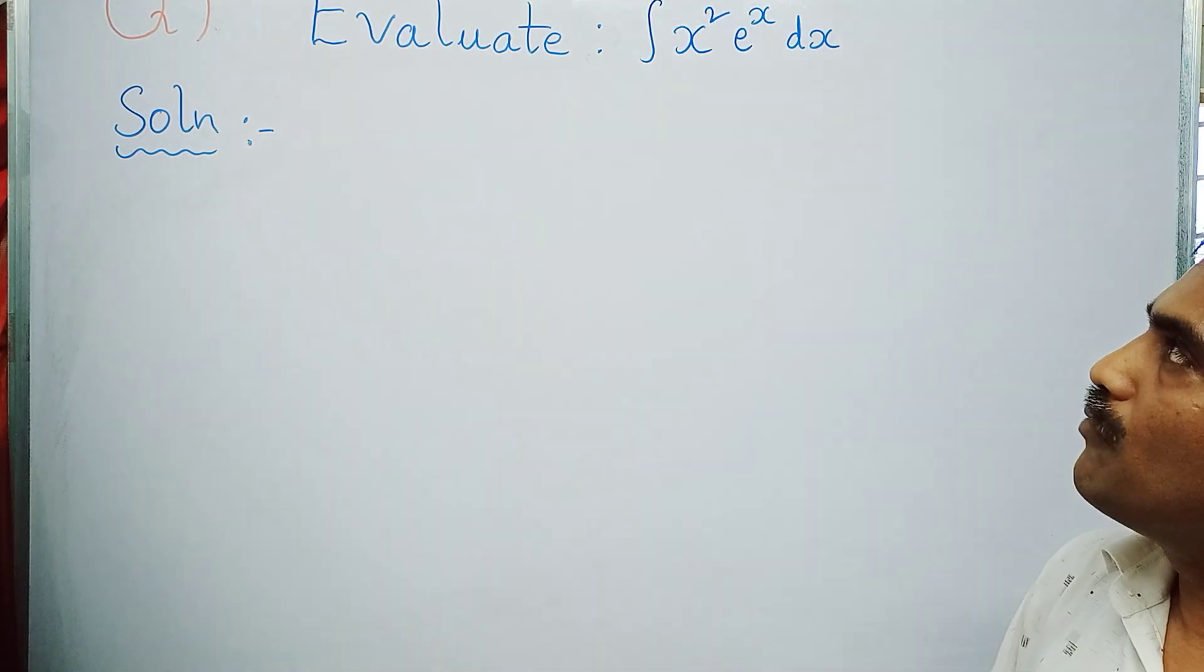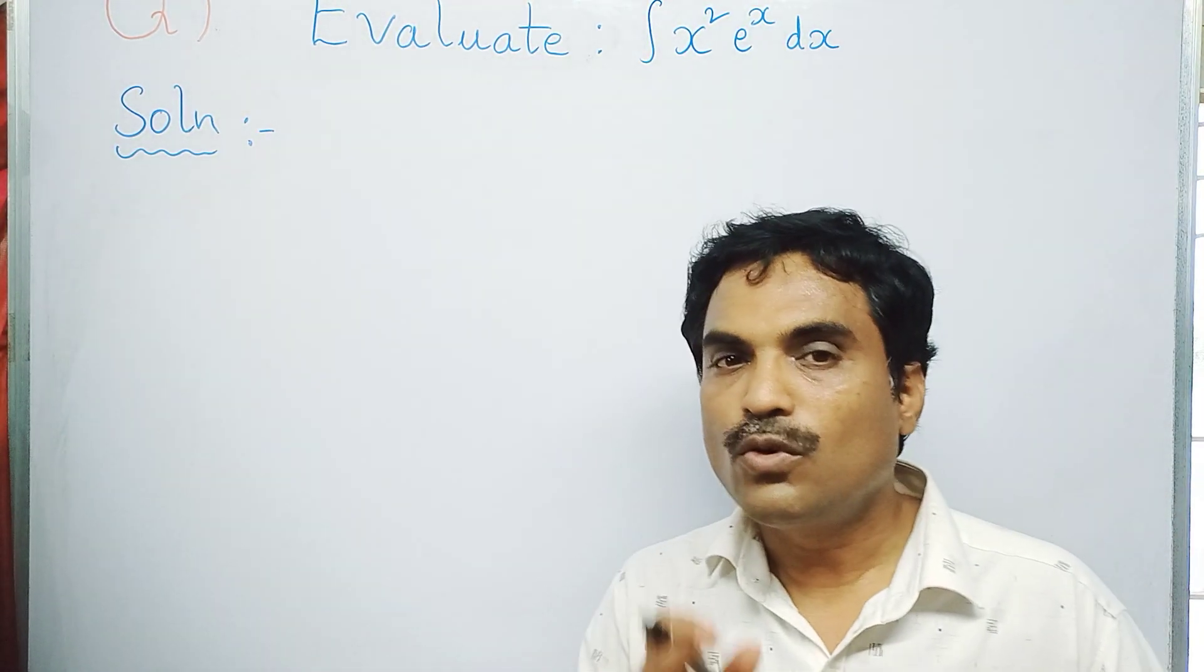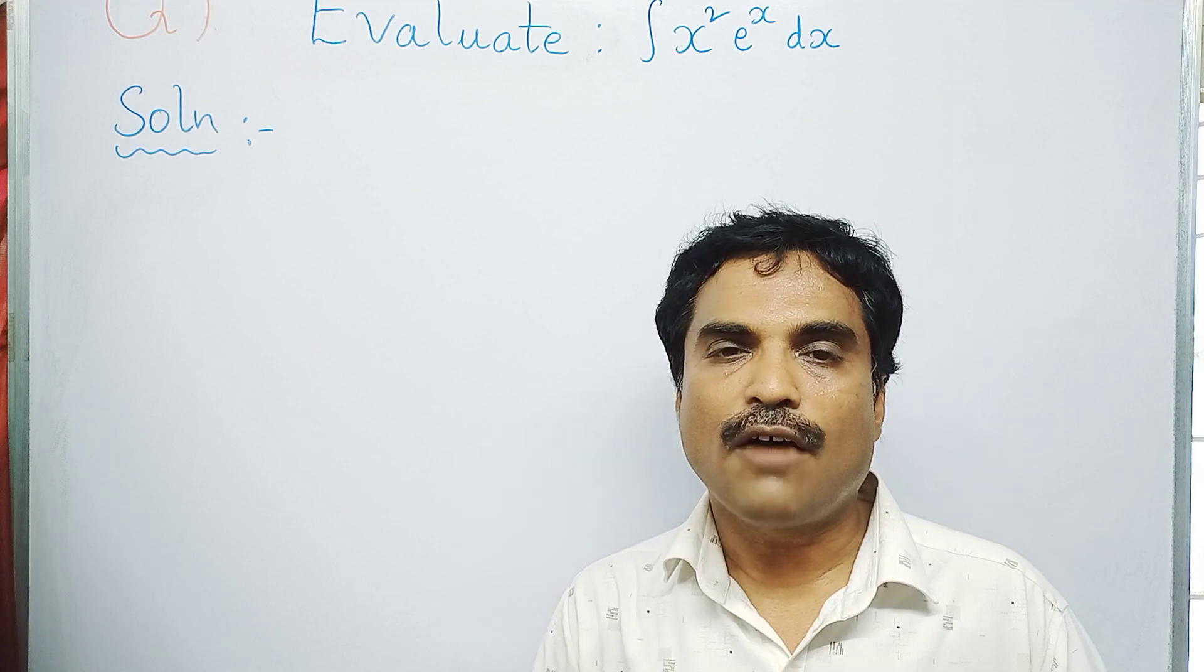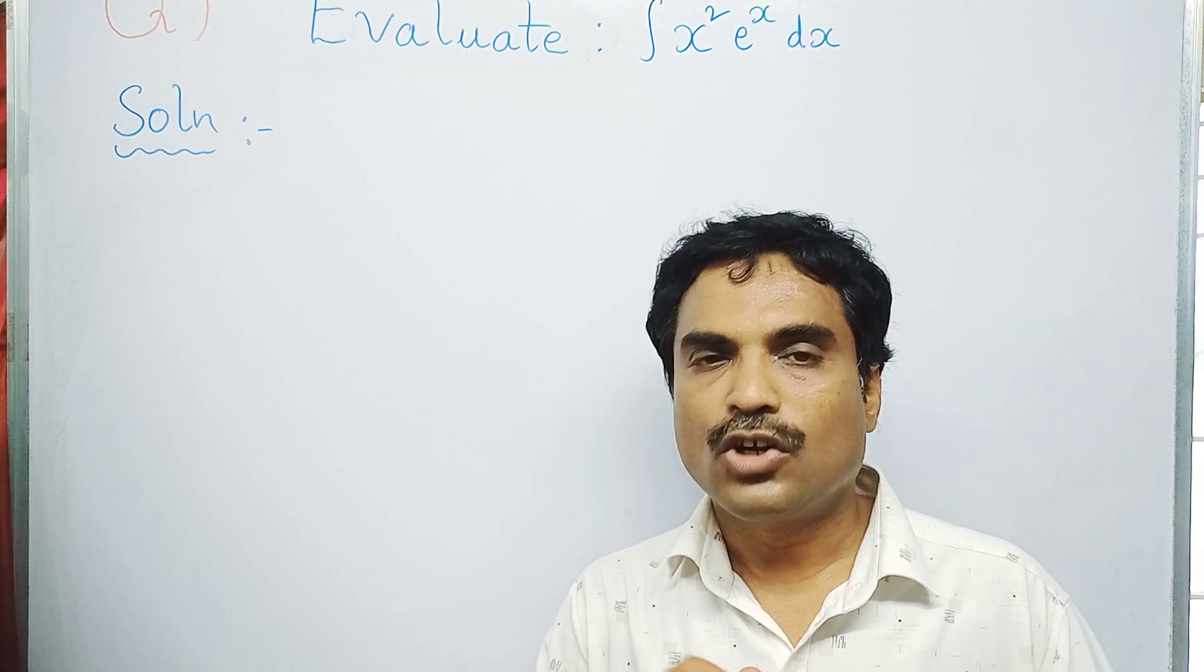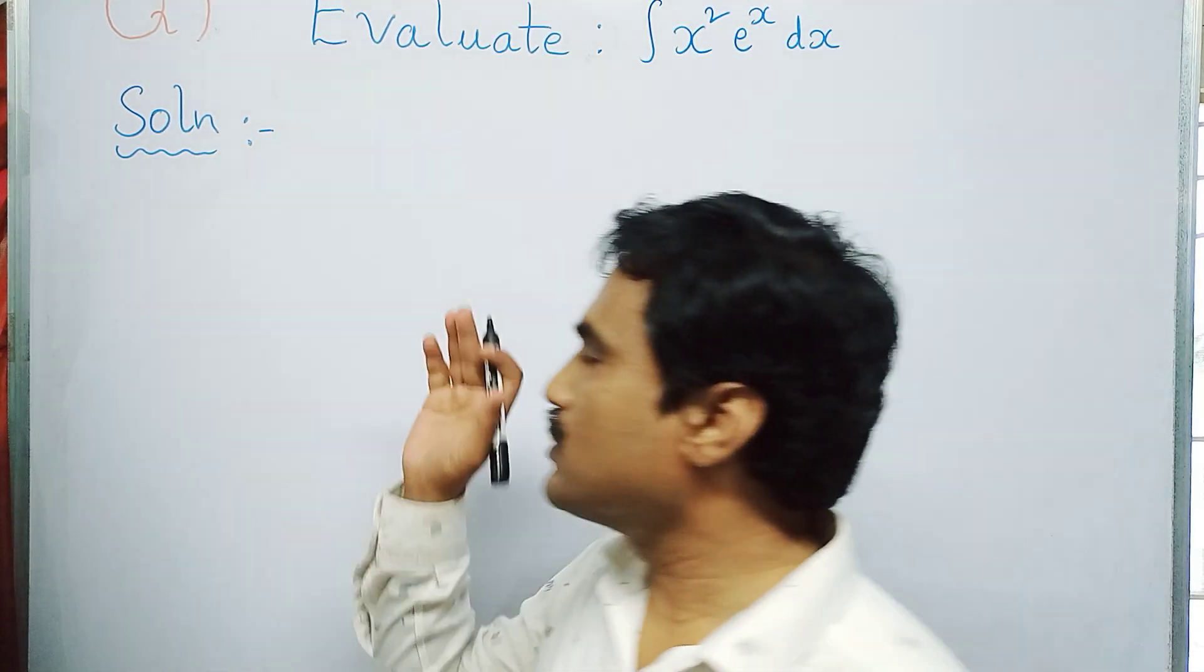First, from the given integrand that consists of two functions, we choose u and dv by using the term ILATE. After that, we apply the Bernoulli's formula of integration by parts method to get the solution.